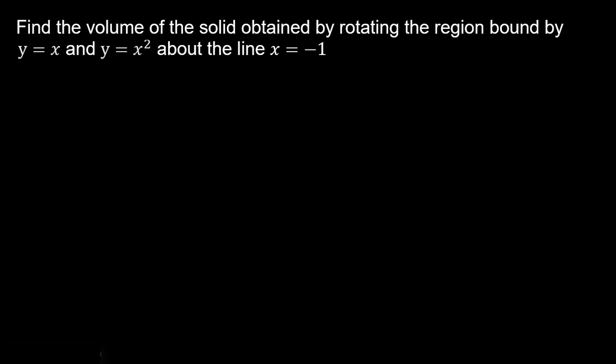Some ways it's going to be more difficult: we're going to use the washer method, which is a bit more advanced than the disc method. We're going to rotate our shape around an off-axis line, and we'll also be forced to integrate with respect to y instead of x. So we're definitely going next level. The problem is: find the volume of the solid obtained by rotating the region bound by y equals x and y equals x squared about the line x equals negative 1.